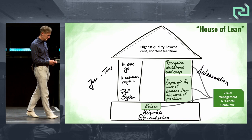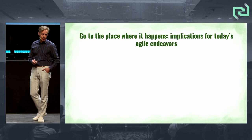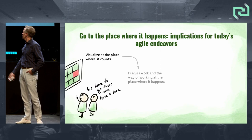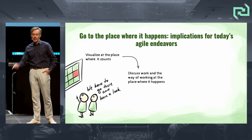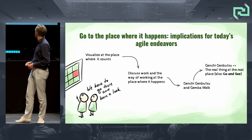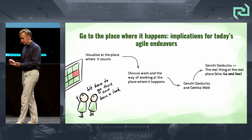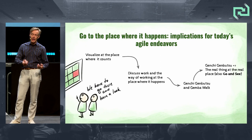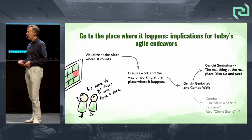Genchi Genbutsu — the real thing at the real place. Go to the place where it happens. Visualize at the place where it counts, where things happen. Combine that with really discussing the work where it happens instead of at the manager's office. Really going to the place where the problem is — that's the real basis of the Genchi Genbutsu and Gemba walk idea. In Toyota Japan, it's forbidden for managers to call employees to report — they have to go to the place of work and discuss it there.